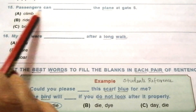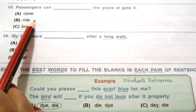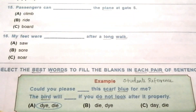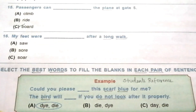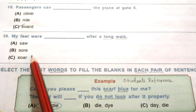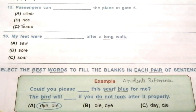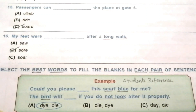Question 15: passengers can blank the plane at gate 5 — climb, ride, board. The answer is C, board. Passengers can board the plane at gate 5. Question 16: my feet were blank after a long walk — saw, sore. The answer is B, sore. My feet were sore after a long walk. Sore means painful or aching.